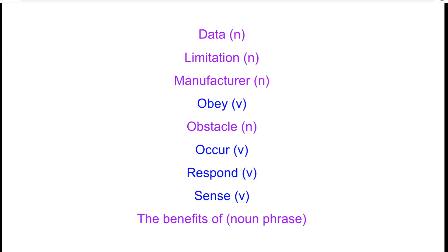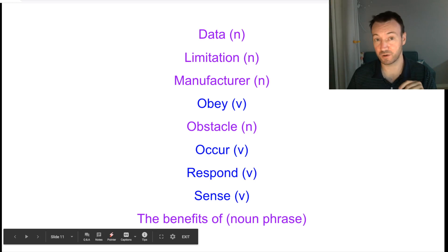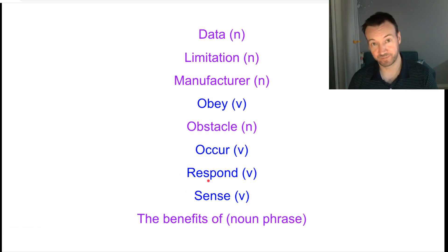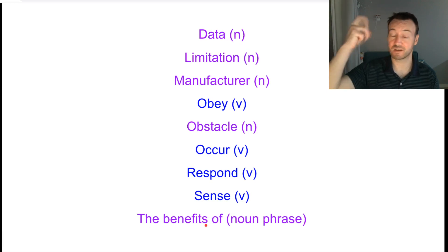So some important things to think about first. If we look at this bottom one here — 'the benefits of' — this is a nice fixed phrase, a nice little collocation. Here we have the plural, 'benefits of.' However, we should remember that it can also be singular — 'the benefit of.' So if there's only one, you could say 'the benefit of.' In this case, we're going to use the plural, 'benefits of.' Just bear in mind that it can be both.